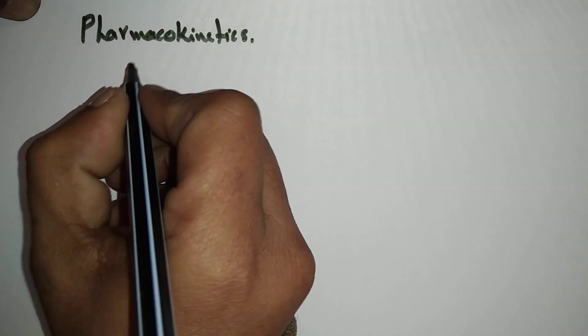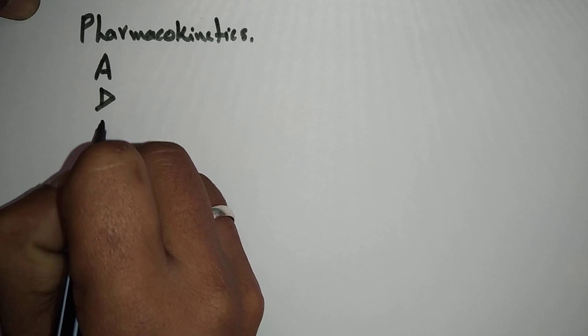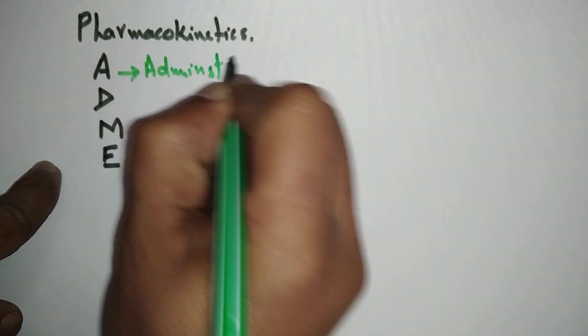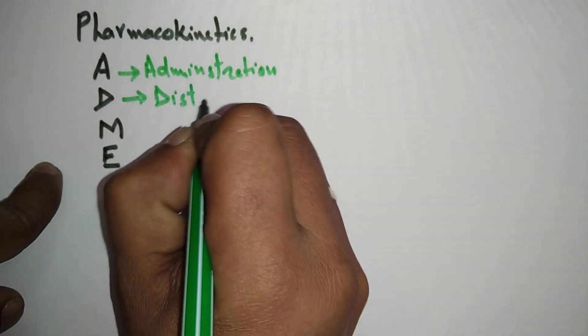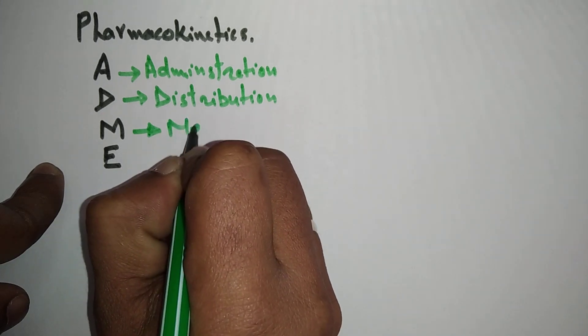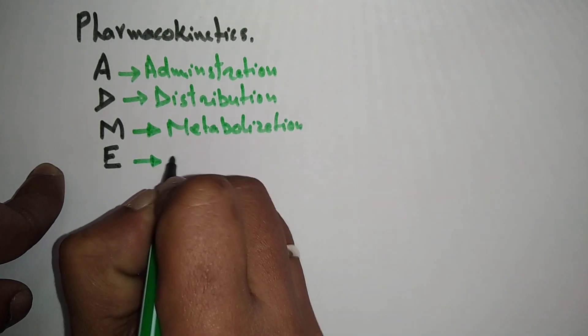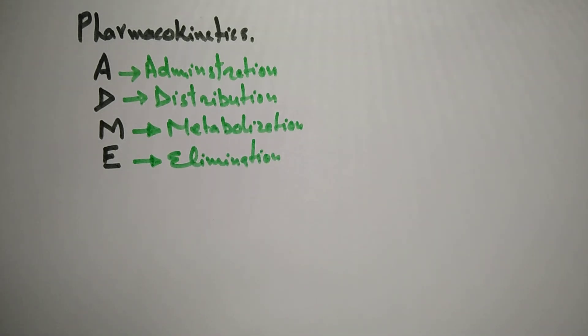In pharmacokinetics, you have to focus on ADME: A-D-M-E. A means administration of the drug, D means distribution of the drug, M means metabolization of the drug.